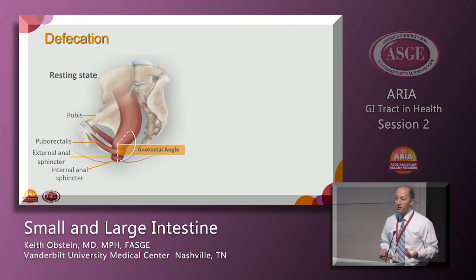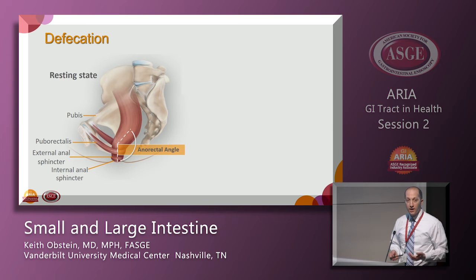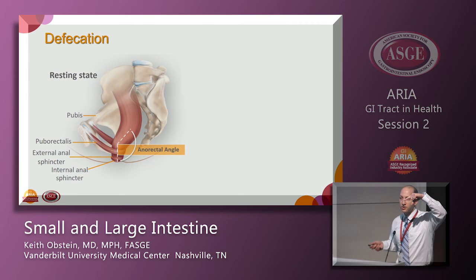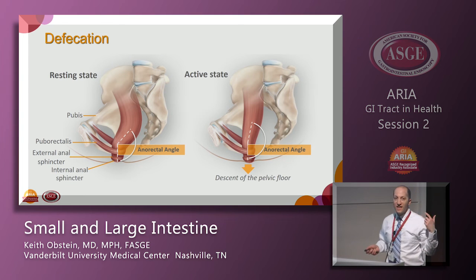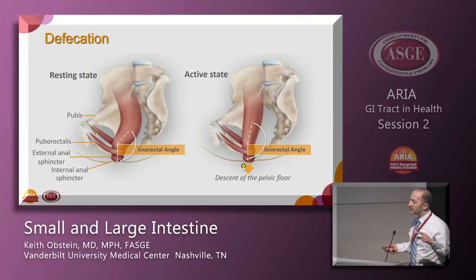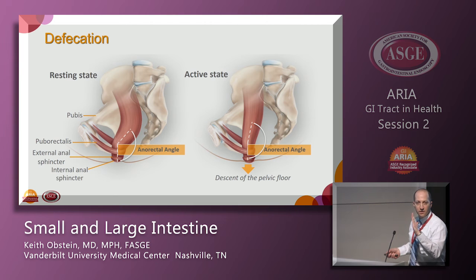Defecation involves the puborectalis muscle in the pelvic floor, which creates an angle that prevents stool from dropping out when the pelvic floor is elevated. When it's an appropriate time to defecate, that muscle relaxes, which drops the angle so it becomes more of a straight line and the pelvic floor descends, allowing the stored material to be evacuated.